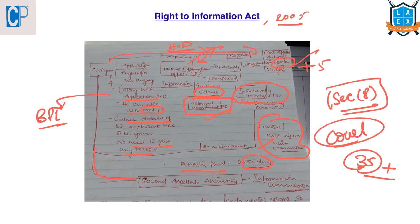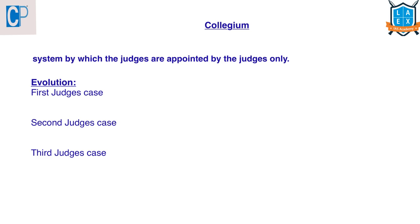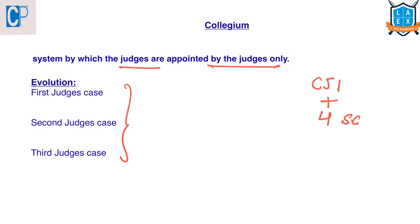The collegium system in India is the system by which judges are appointed by judges themselves — also referred to as 'judges selecting judges.' It is a system of appointment and transfer of judges that evolved through Supreme Court judgments, not through an act of parliament or a constitutional provision. The Supreme Court collegium is headed by the Chief Justice of India and comprises four other senior-most judges. A High Court collegium is led by its Chief Justice and four senior-most judges. Recommendations from a High Court collegium reach the government only after approval by the CJI and the Supreme Court collegium.